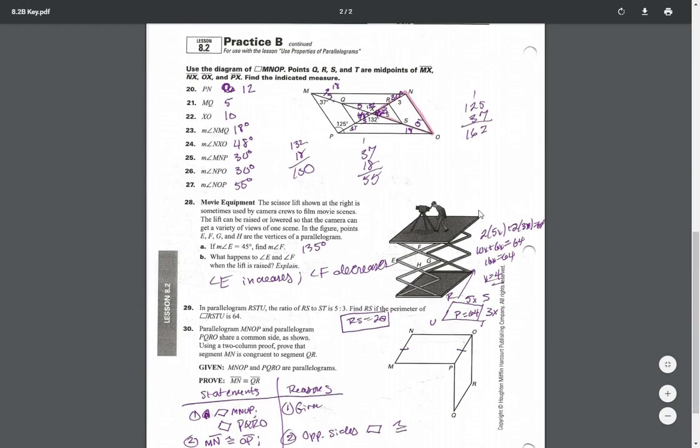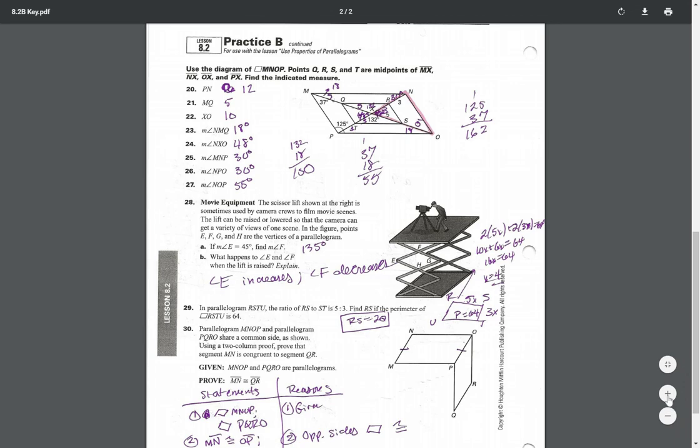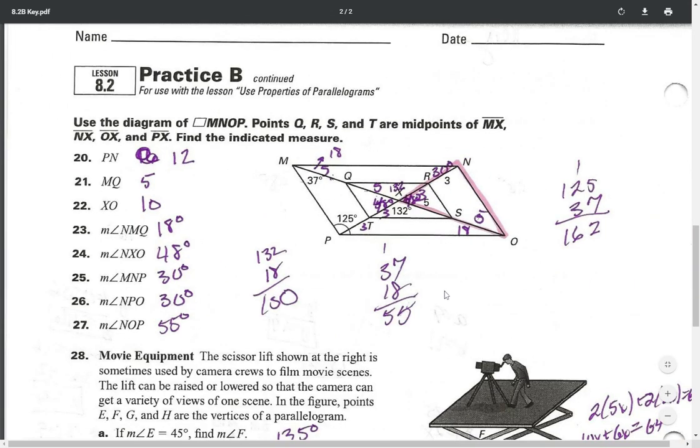Problems 20 through 27 are more complicated. They tell you P, Q, R, S, and T are midpoints of MX and all these little half pieces. There's a lot going on in this picture. Let me zoom in so we can look at it larger.